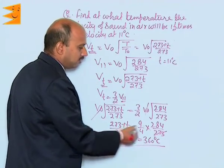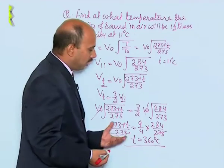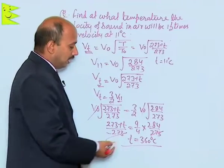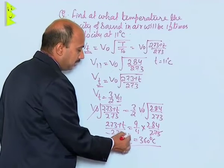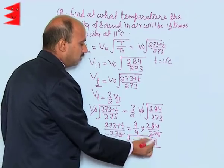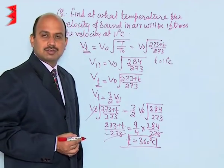You can solve this equation easily — just cross multiply and use basic arithmetic. The answer is T = 360 degrees Celsius.